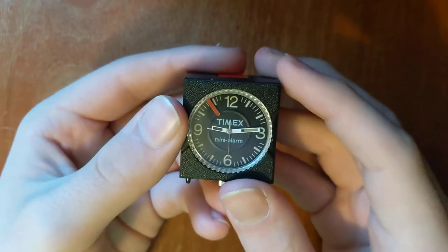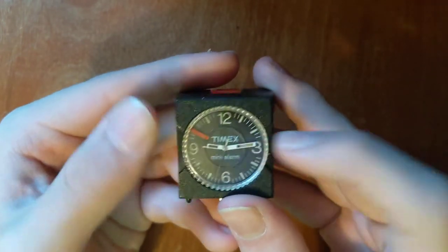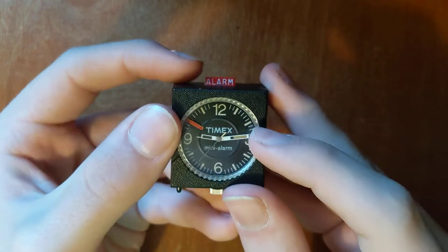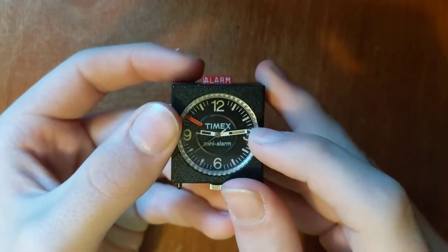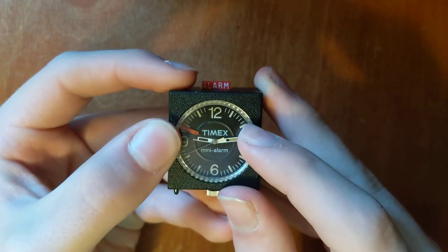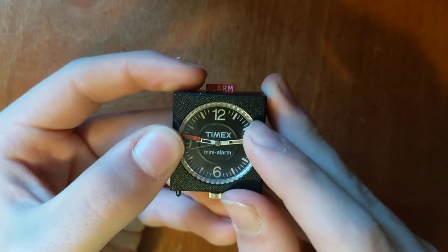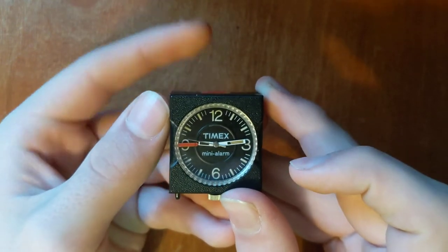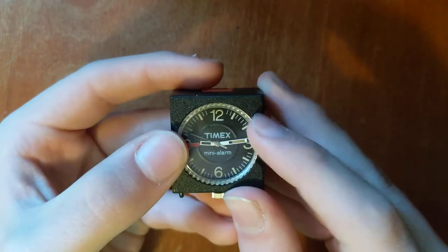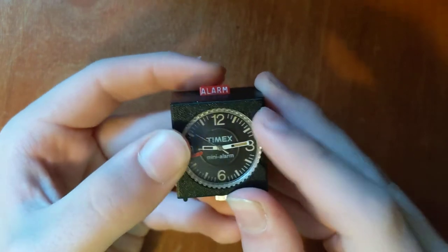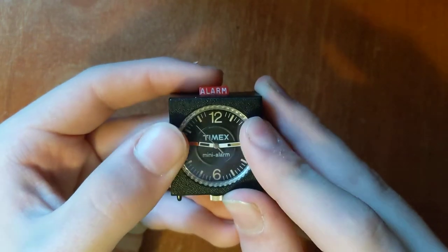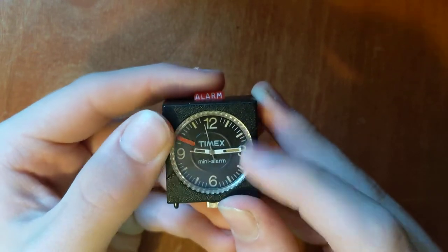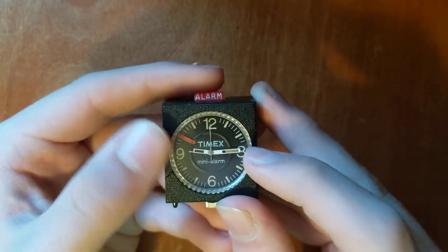To use the alarm, you set the time and then press this button that says alarm. Eventually your hour hand would get to wherever you set it, but I'll just move it for demonstration. You can turn it off with the button. Not sure why it doesn't want to work right there. The battery's pretty old though.